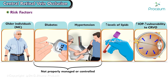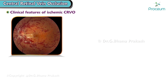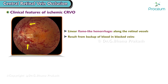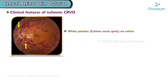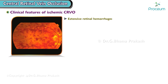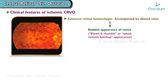Now, let's go over the clinical features of ischemic central retinal vein occlusion. Linear, flame-like hemorrhages are observed along the retinal vessels, resulting from the backup of blood in the blocked veins. White patches known as cotton wool spots appear on the retina due to infarction of the nerve fiber layer. Extensive retinal hemorrhages accompanied by dilated veins give the retina a reddish appearance, resembling a blood and thunder or splash of tomato ketchup appearance.